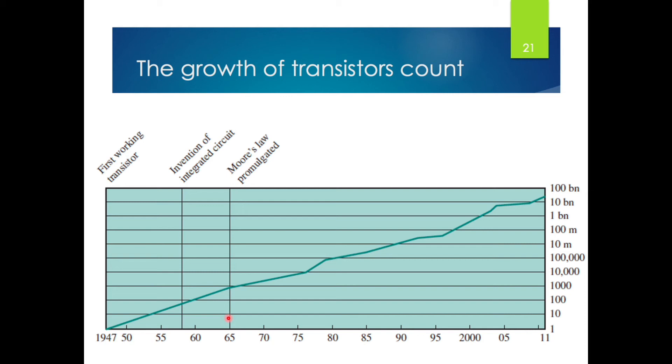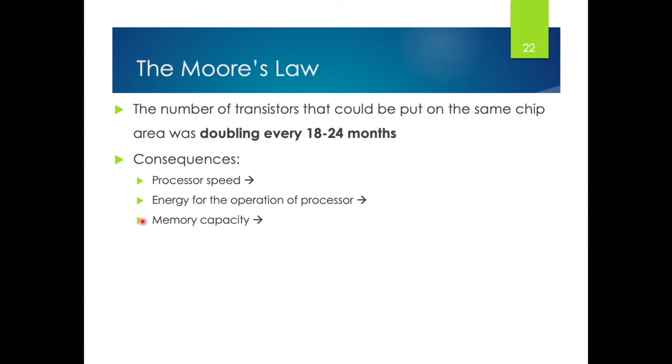Advancements in digital electronics, such as the reduction in quality-adjusted microprocessor price, the increase in memory capacity like RAM and flash memories, the improvements of sensors, and even the number and size of pixels in digital cameras, are strongly linked to Moore's Law. To the surprise of many, including Moore, the pace continued year after year and decade after decade. The pace slowed to a doubling every 18 to 24 months in the 1970s but has sustained that rate ever since.